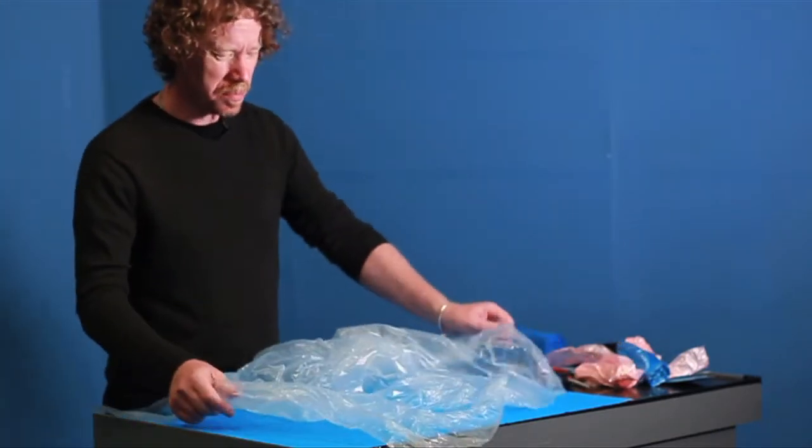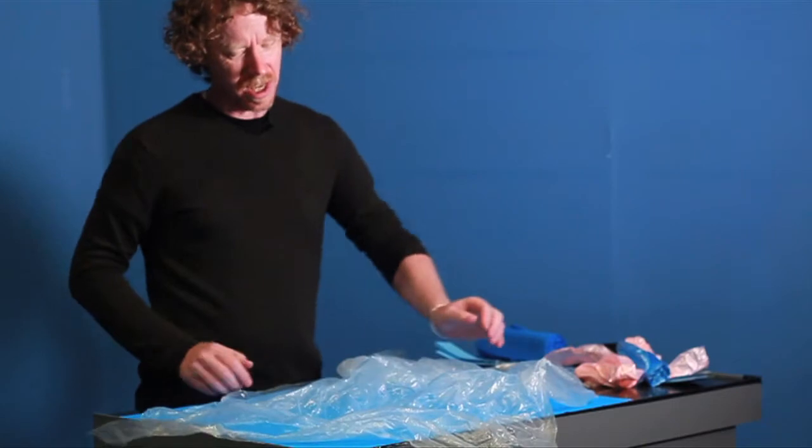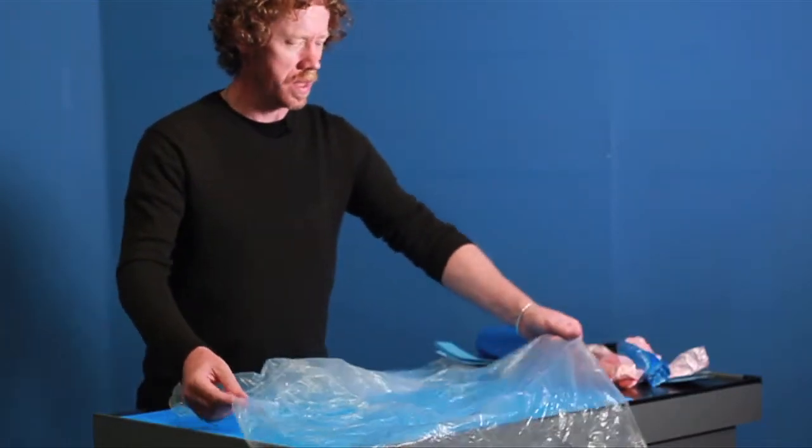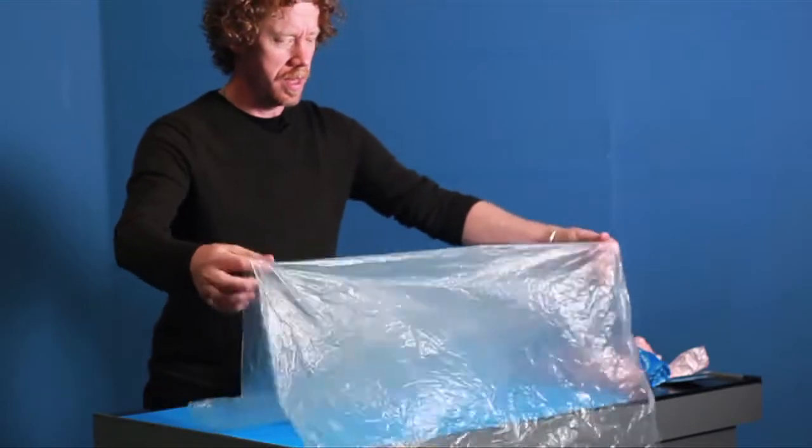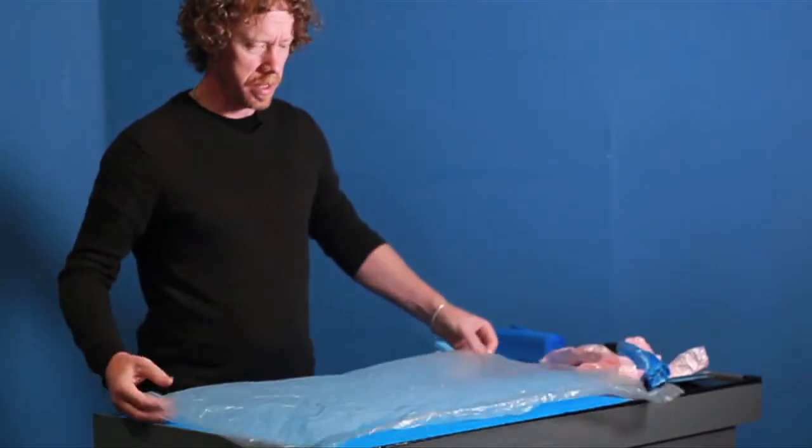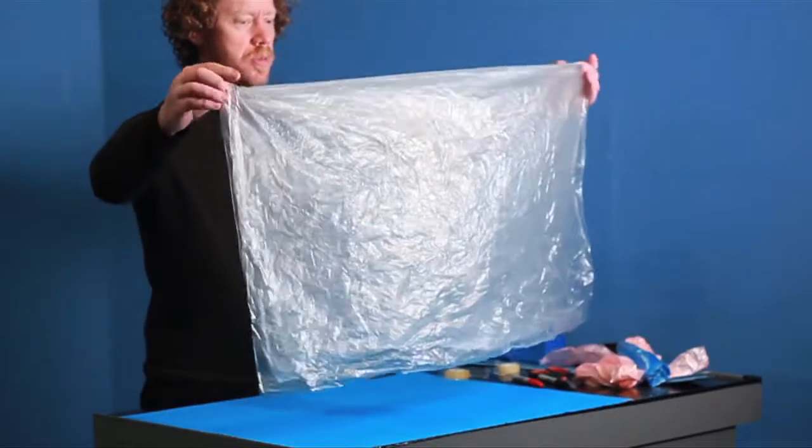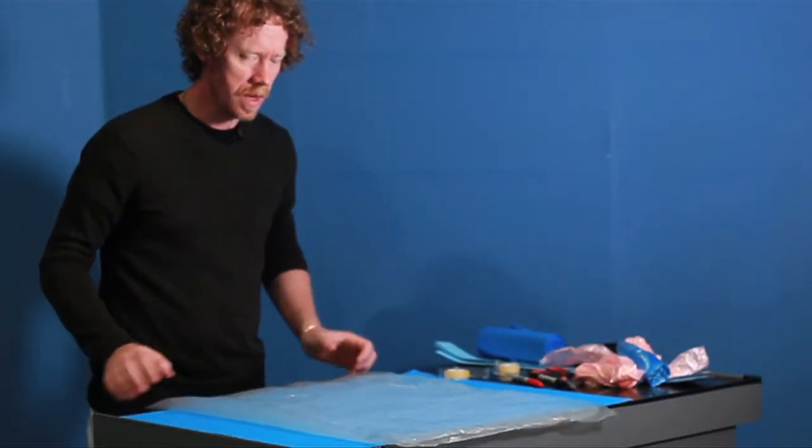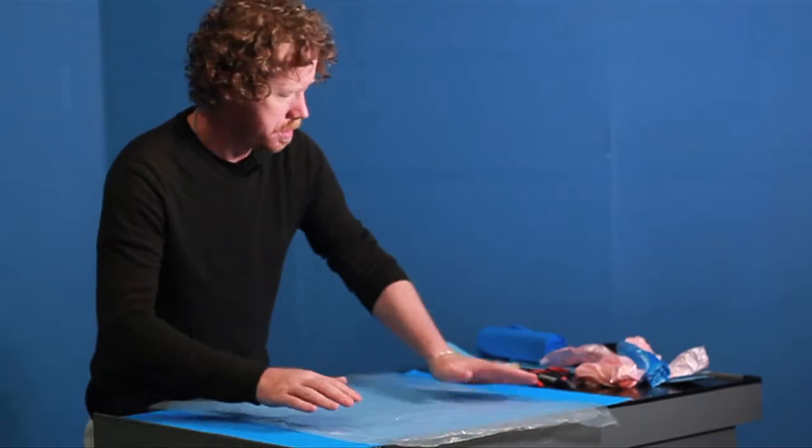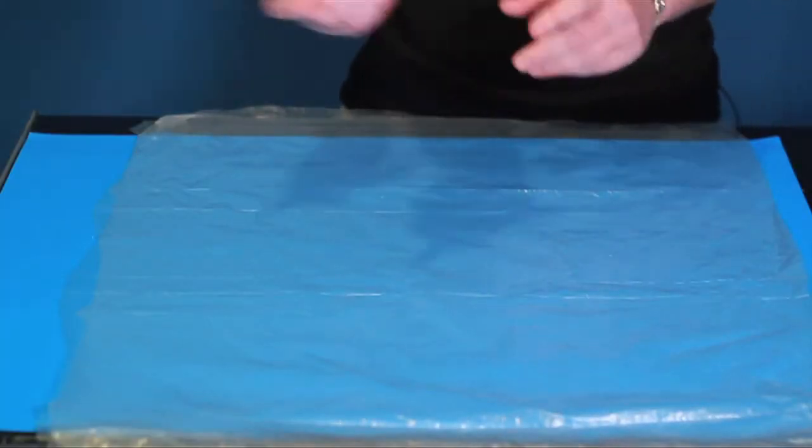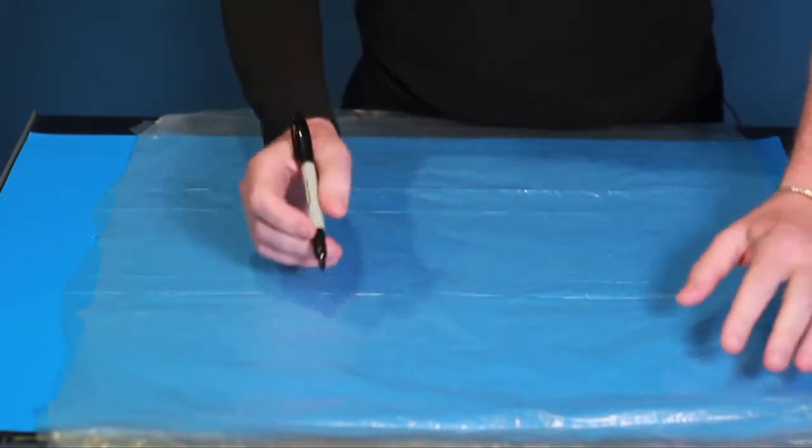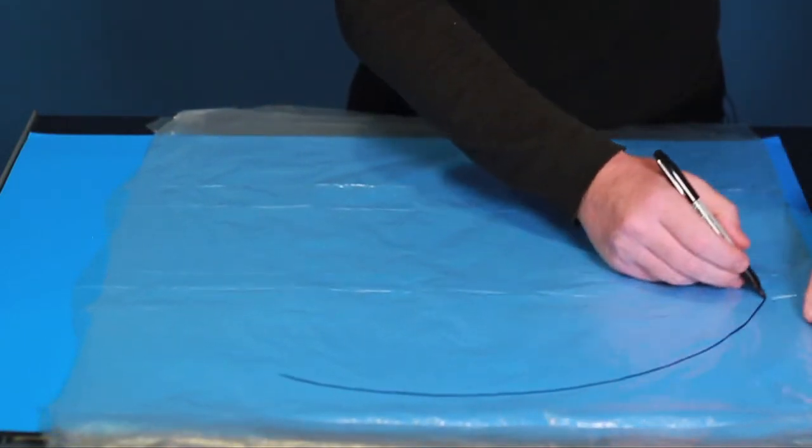To get started, to get an understanding of how this works, first we're going to have you make a ball. Let's try to make a ball out of this plastic, so I'm going to take this sheet of plastic, fold it over, lay it out flat, and then I'm going to draw a circle on this. I guess I'm making a head, so I'll draw a circle.